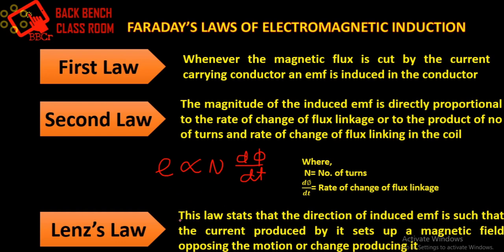Then Lenz's law came into account. Lenz's law states that the direction of the induced EMF is such that the current produced by it sets up a magnetic field opposing the motion or change producing it. So E becomes equal to minus N into dΦ by dt.